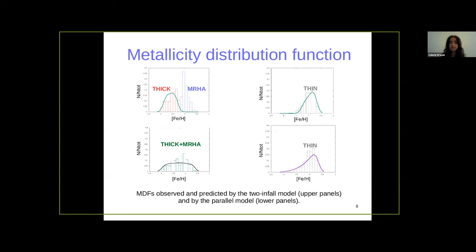As a final constraint, we consider the metallicity distribution function (MDF). Here I show the observed and predicted MDF by the two-infall model in the upper panels and the parallel model in the lower ones. In the case of the two-infall model, we can explain the MDF of the thick disk and thin disk, but not the metal-rich high-alpha stars — the only way to explain them is by assuming radial migration from the inner regions of the Milky Way. In the case of the parallel model, we can explain the whole thick plus metal-rich high-alpha MDF, interpreting these stars simply as metal-rich thick disk stars.